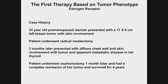The patient he saw was a young woman, 33, premenopausal, who several months earlier had presented with a very large locally advanced tumor — 11 by 8 centimeters — with clear skin involvement, and she underwent a mastectomy. Three months later, she had diffuse chest wall involvement, skin ulceration, lymph node involvement, and apparent metastatic disease in her thyroid. At the time in the 1890s, there was no other treatment. What he did was remove her ovaries a month later. Over the next couple of months, she developed a complete remission and actually survived for four years before dying from breast cancer.